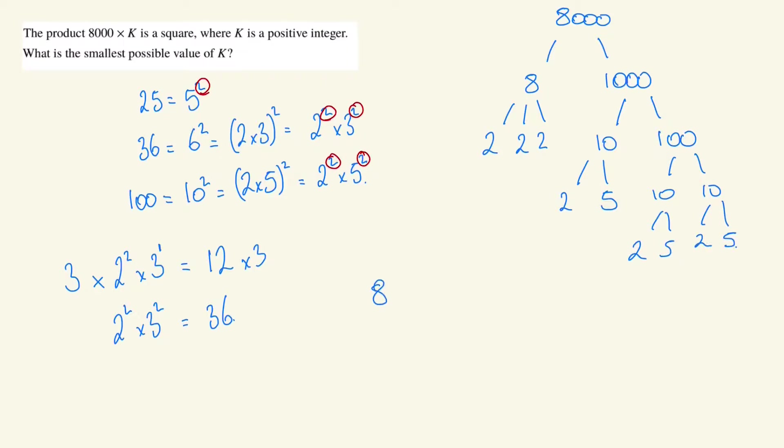So therefore, 8,000 is equal to 2. How many times does 2 appear? It appears 1, 2, 3, 4, 5, 6 times, so 2 to the power of 6, multiplied by 5 appears 3 times, so 5 cubed.